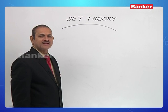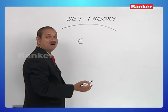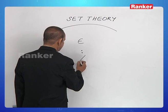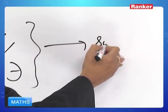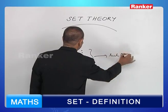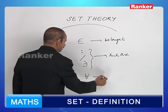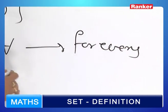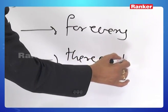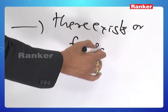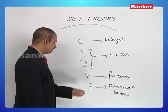Before going to deal with the remaining concepts in set theory, let us recall some standard symbols. The symbol '∈' means belongs to. There are three symbols used to mean such that. '∈' means belongs to. '∀' means for every. '∃' means there exists, or for some. The colon or vertical bar symbols mean such that. For every, there exists.